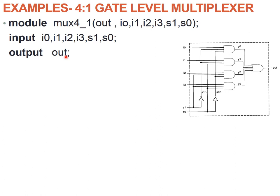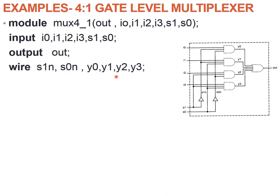Along with input and output, we need some nets. Nets or wires are declared using the keyword wire. We list all the wires: S1N, S0N, Y0, Y1, Y2, and Y3. Once declarations are done, it is time to do the gate instantiations individually. To write a gate level description, we just have to instantiate a gate and list the output and input variables.